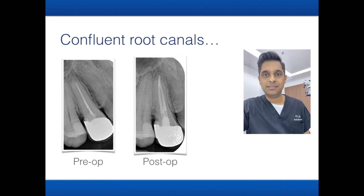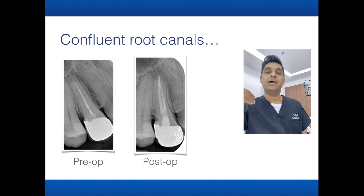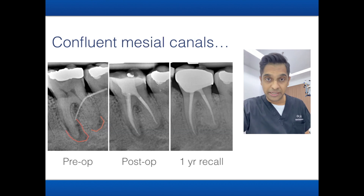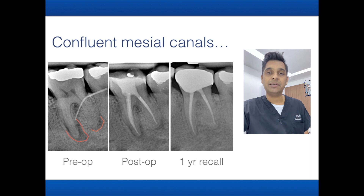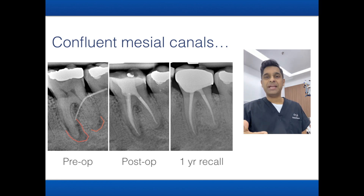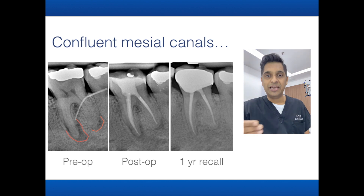Here is a classic example of a confluent premolar in a retreatment case — the post-op clearly shows the confluence in the canal at the apical third. Another molar case shows a patient who presented with a necrotic pulp and a chronic abscess; multi-visit root canal treatment was completed and follow-up confirmed this tooth also had a confluent mesial canal. Managing confluent canals is straightforward if you follow the steps described.